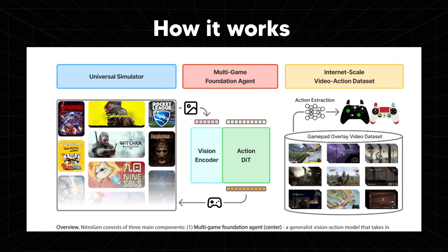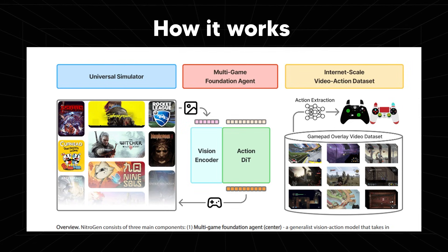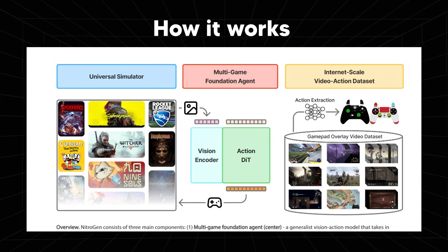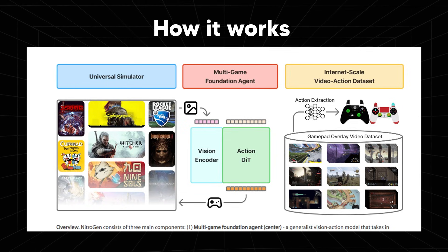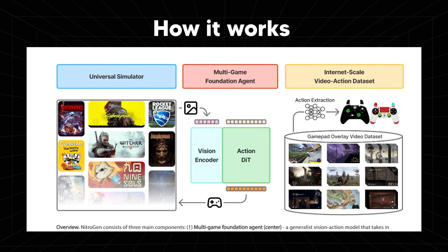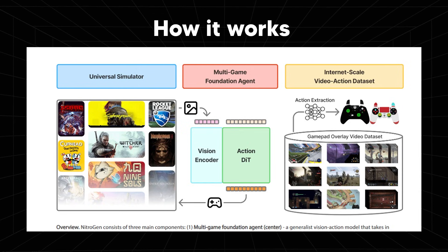On the left you can see the Universal Simulator. This is a wrapper that lets any commercial game behave like a research environment. You have many different games — 2D, 3D, platformers, RPGs, and shooters. Nitrogen doesn't get special access to game internals. It only sees raw pixels and then sends controller inputs. This is an AI agent that sees the game exactly as we do. Unlike every other AI agent, which is usually hard-coded to one game, this agent can run across many games with the same interface.